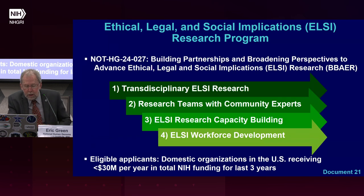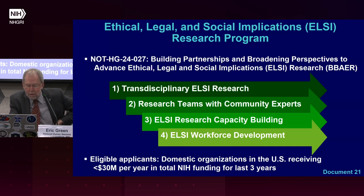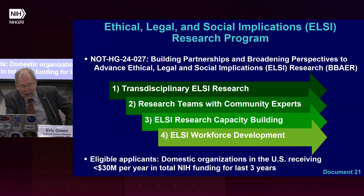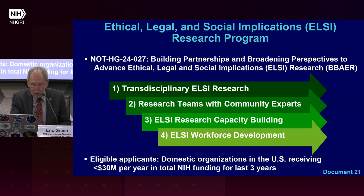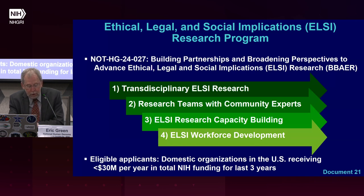NHGRI intends to release a new funding opportunity entitled Building Partnerships and Broadening Perspectives to Advance Ethical, Legal, and Social Implications Research, or BBAER — pronounced BEER. The program has four goals: to support transdisciplinary community experts as team members; to enhance ELSI research teams by including community experts; to build capacity for ELSI research within organizations not traditionally funded by NHGRI; and to expand the ELSI research workforce. Eligible applicants include domestic organizations receiving less than $30 million per year in total NIH funding in the last three years. A notice of intent to publish was released in March to allow potential applicants time to develop meaningful collaborations and responsive projects.